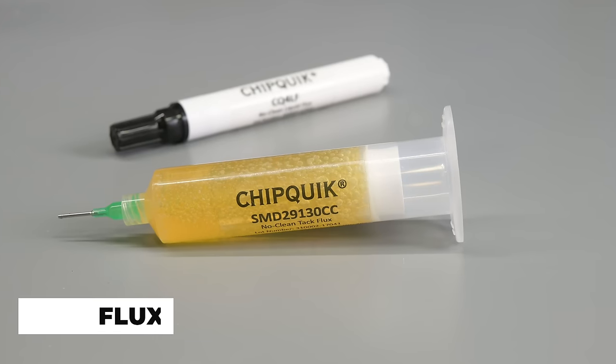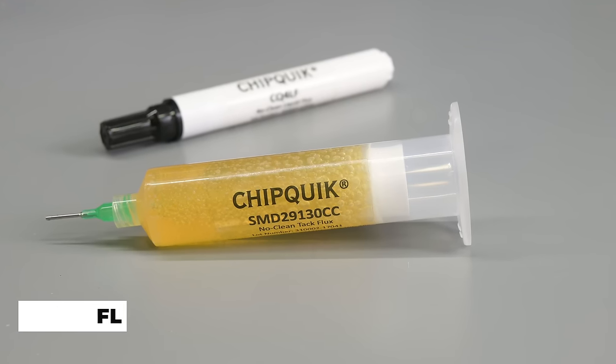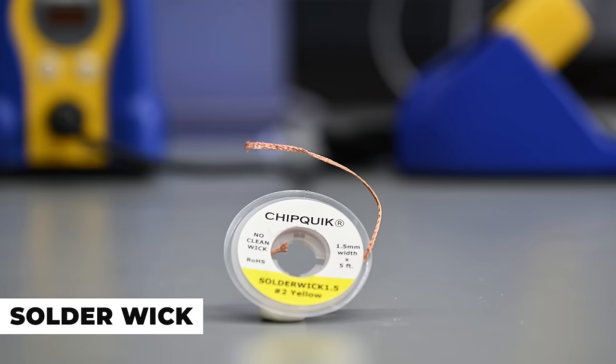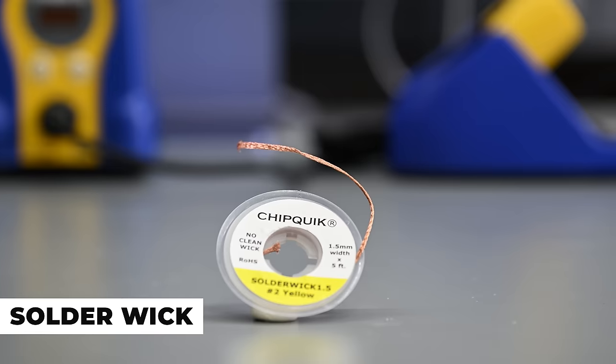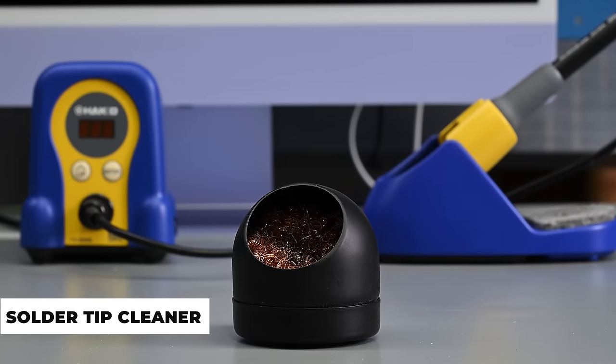We'll also need some flux which helps to remove oxidation from the contacts and ensures we get a strong bond between the solder and whatever we're soldering. Most solder these days already contains flux at its core but we'll need more to ensure a solid solder joint. We're also going to need some solder wick braid for desoldering and a wet sponge or solder tip cleaning ball to clean the iron tip.